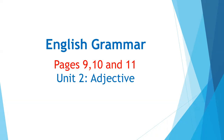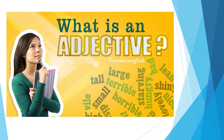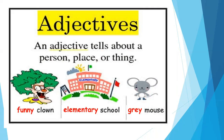Page number 9, 10, 11. Here is number 2: Adjectives. What is an adjective? An adjective tells about a person, place, or thing. We already read about nouns in the previous chapter. A noun is the name of a person, place, or thing, but an adjective tells about a person, place, or thing.